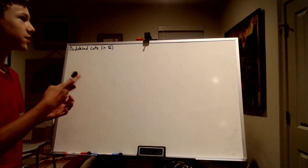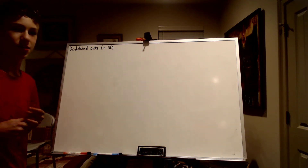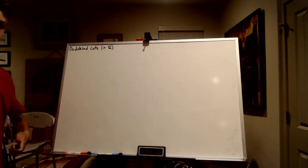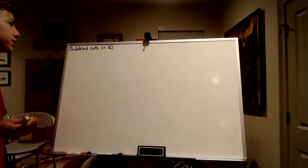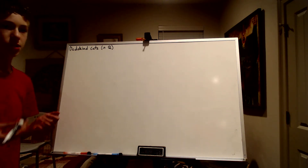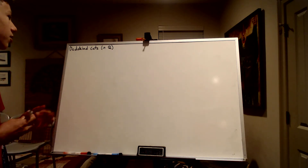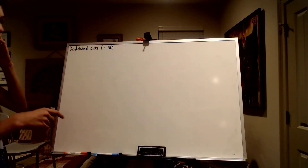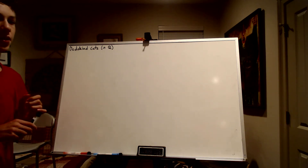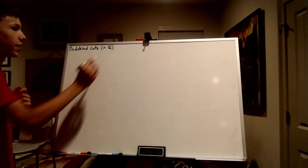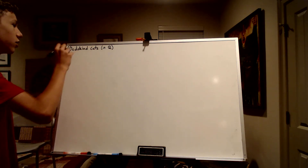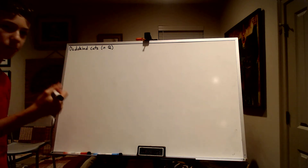Welcome back. So today we're continuing this little introduction to real analysis series, and we're going to define the real numbers before we can use them. To define the real numbers, we're actually going to express them as sets of rational numbers obeying three important properties. They're called Dedekind Cuts. Let's list out the three properties.